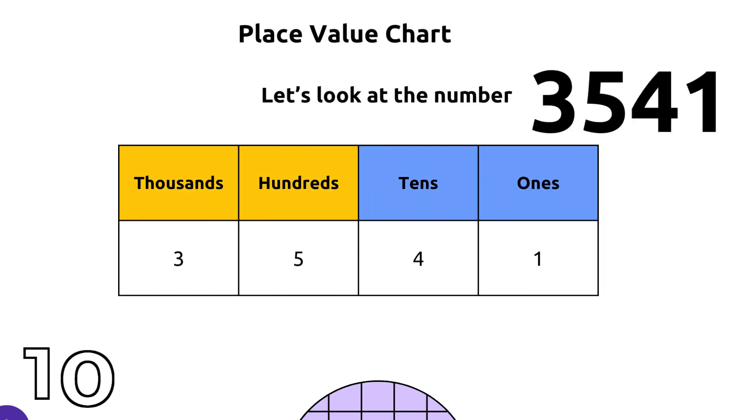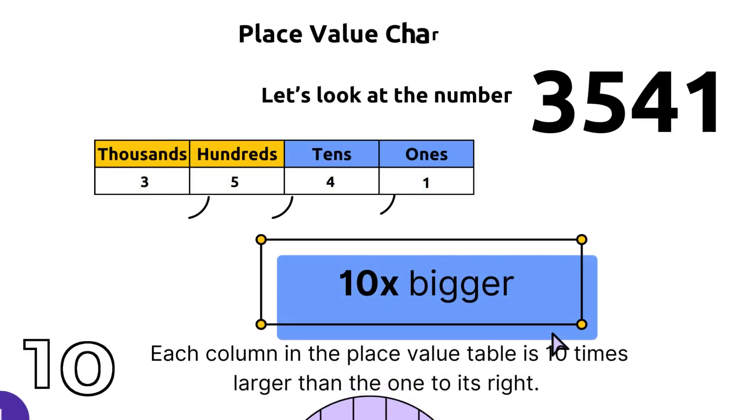If you look at this number, the three is in the thousands place, the five is in the hundreds place, the four is in the tens place, the one is in the ones place which makes the whole number 3541. As you can see as you go from right to left, each number gets larger, actually 10 times larger.